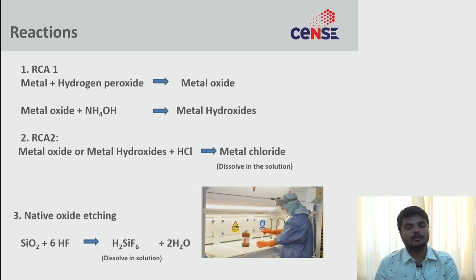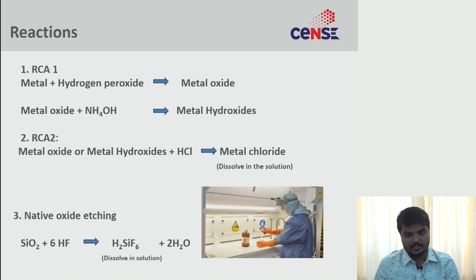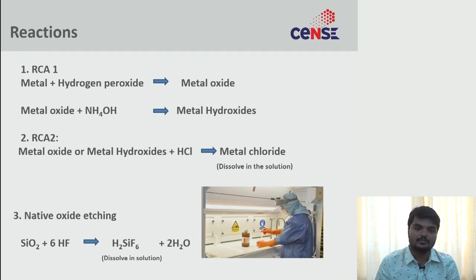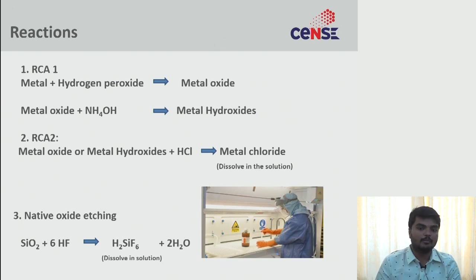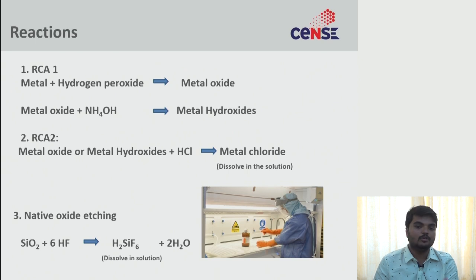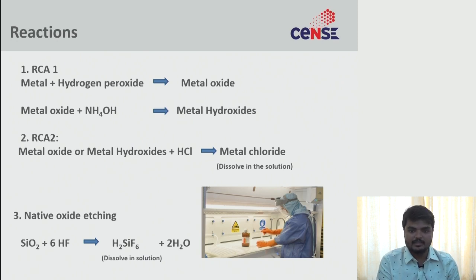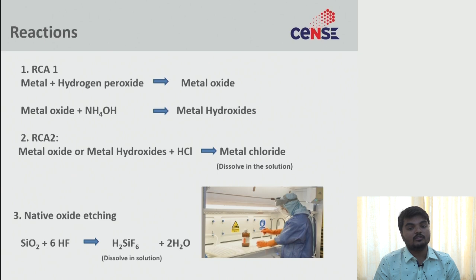In RCA2, the metal oxides or metal hydroxides formed in RCA1 react with HCl — hydrochloric acid. HCl dissociates into hydrogen ions and chloride ions. The chloride ions react with metals to form metal chlorides, which are salts. Salts are highly soluble in DI water, so they dissolve in the six parts of DI water in RCA2.